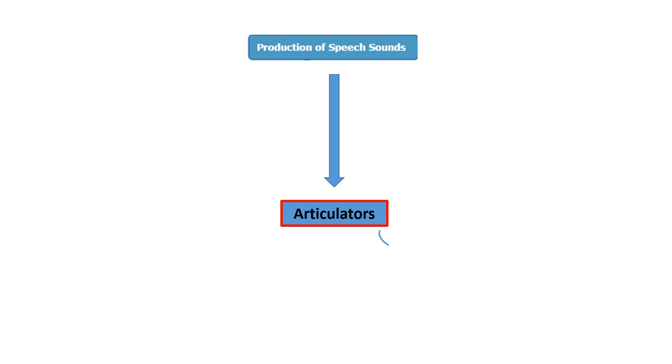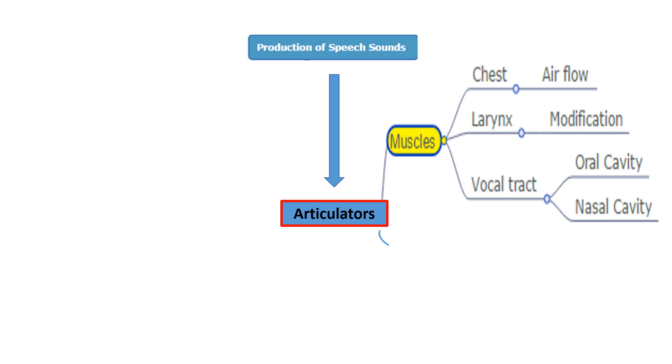For the production of speech sounds, you need articulators. Articulators need muscles. The muscles of the chest, the larynx, and the vocal tract.